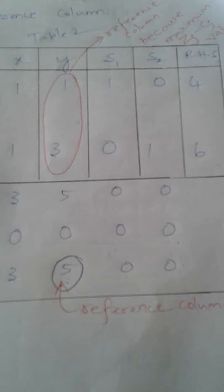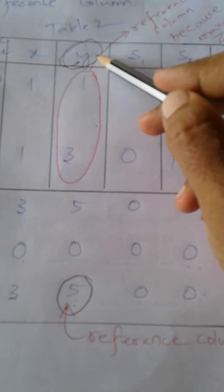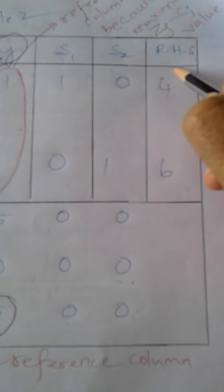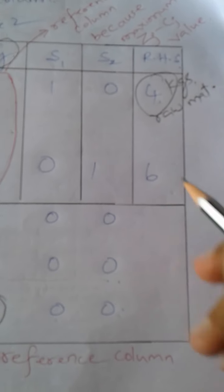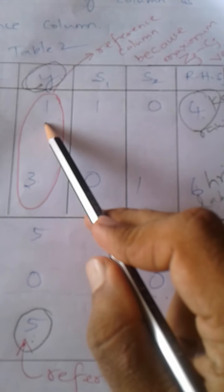The firm has decided to manufacture more number of Product B because it is going to earn more profit by producing this particular product. The next question is: with the available resources — 4 kg of raw material and 6 hours of labor — how many units of Product B can be manufactured? One Product B requires 1 kg of raw material and 3 hours of labor.